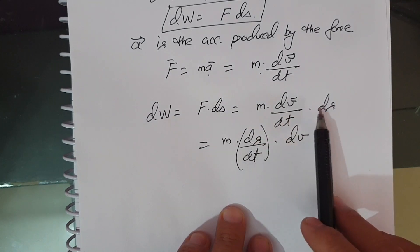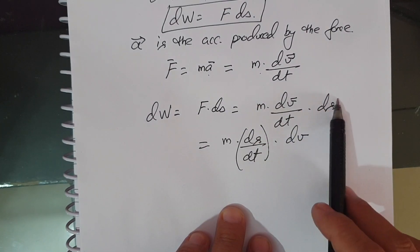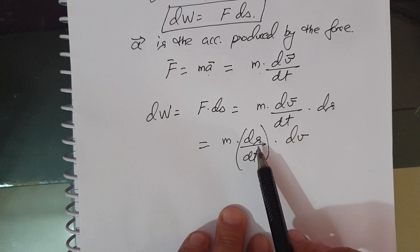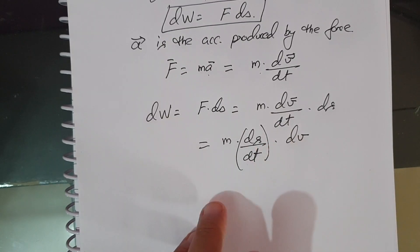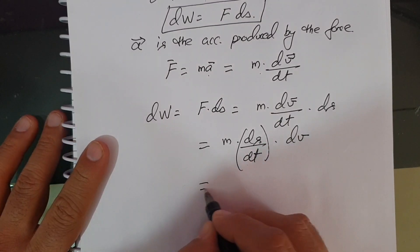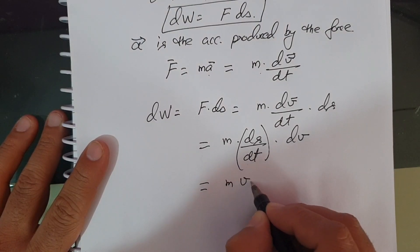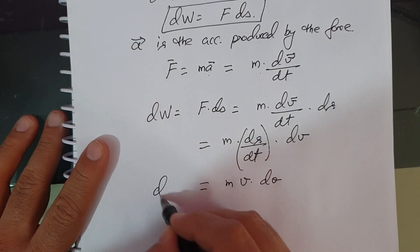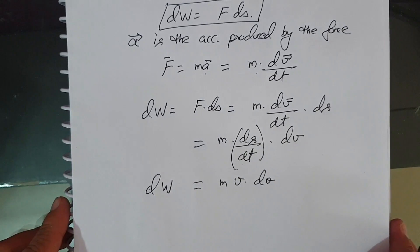dS by dt - this is rearranging. Now what is dS by dt? It is V. So this will be M V into dV, which is dW.